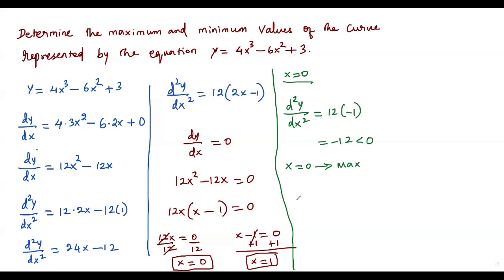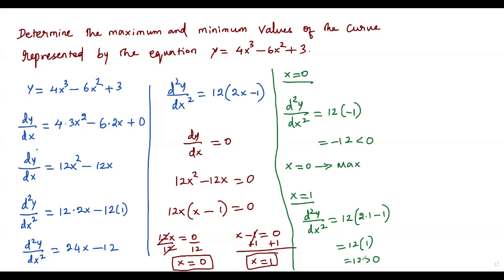Now plugging x equals 1 into the second derivative: d²y/dx² equals 12 times (2 times 1 minus 1), which is 12 times 1, equal to 12. Since 12 is greater than zero, the function has a minimum value at x equals 1.